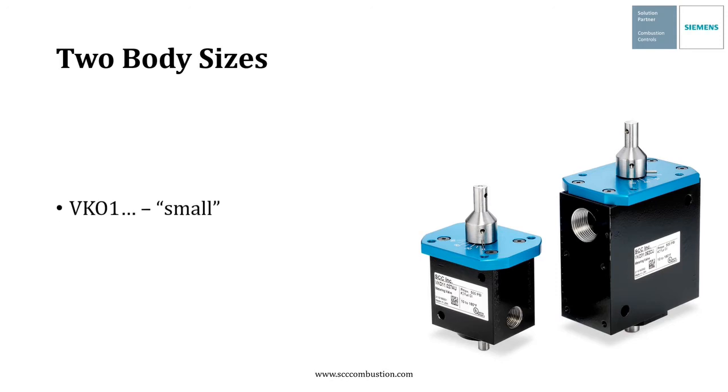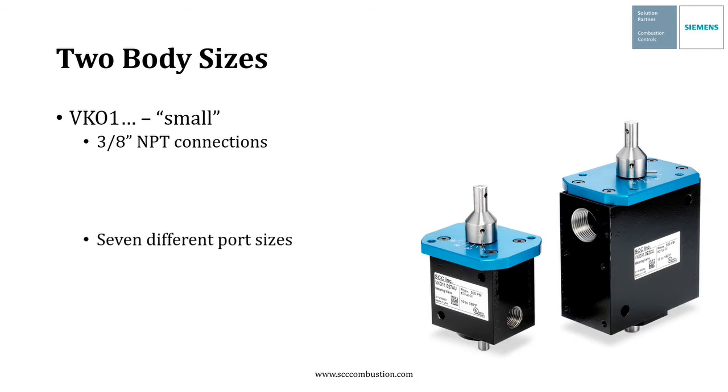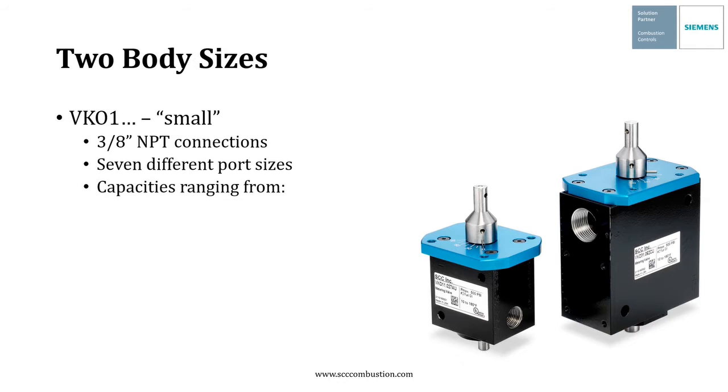They come in two basic body sizes. The VKO-1 is the small size which includes 3/8 inch NPT connections with seven different port sizes. The capacities on the VKO-1 range from about 40 horsepower to 1600 horsepower or about 1.5 million to about 56 million BTUs per hour. Note that capacities vary widely based on the fuel and the pressure available through the valve.